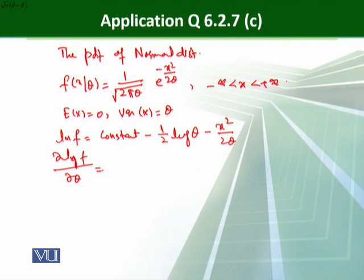that is minus 1 over 2 theta plus x square over 2 theta square.